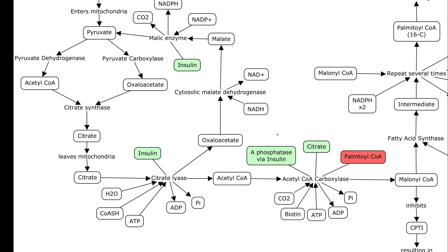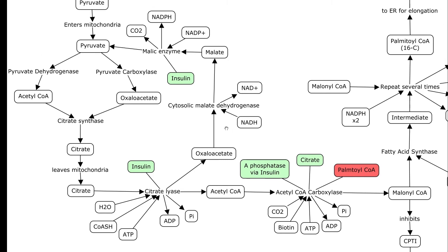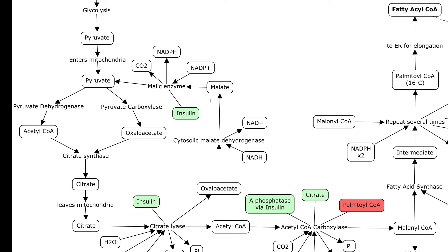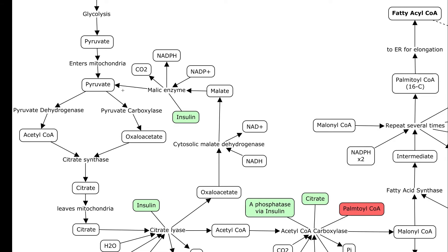Acetyl-CoA is really what we're going to be following, but let's take a detour to see what happens to the oxaloacetate. It's going to be acted on by cytosolic malate dehydrogenase — it gets reduced, and when you reduce oxaloacetate you get malate. Then the malic enzyme, which is also stimulated by insulin, will oxidize it and kick off a CO2 to make pyruvate. So it can try again — maybe become an acetyl-CoA. It's basically just being recycled.